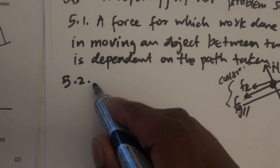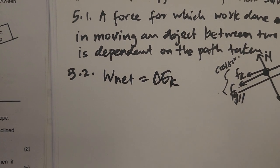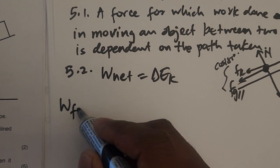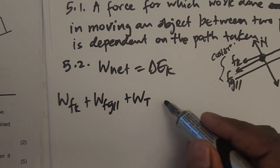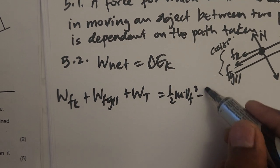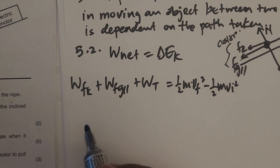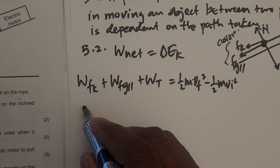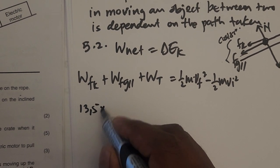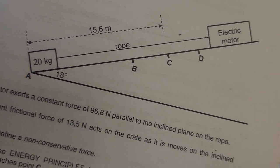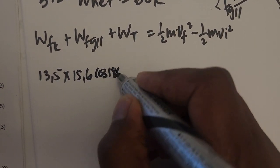Using the work-energy theorem: W_net = ΔEk. The forces doing work are friction, the parallel component of gravity, and tension. So: work done by friction + work done by Fg parallel + work done by tension = ½mv_f² − ½mv_i². Friction is given as 13.5 N, so: 13.5 × 15.6 × cos(180°)...